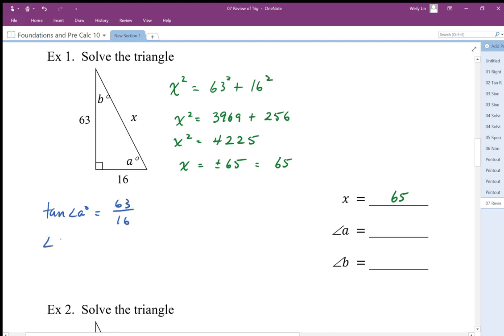I'm going to say that tan of angle A is equal to rise over run. To actually find the angle, we need to use the inverse tan function. So ratio to angle is inverse tan. So I need to then use my calculator: 63 divided by 16 gives us an angle of 75.749. So I'm going to round that to 75 degrees.